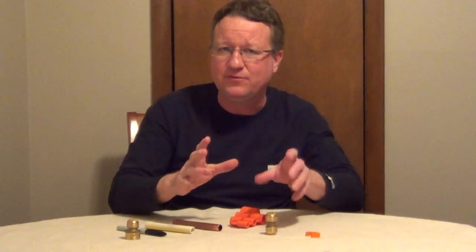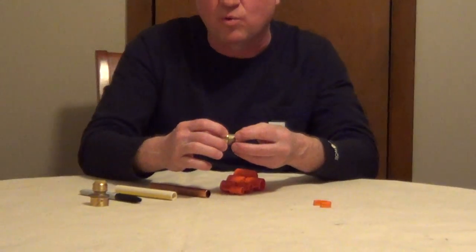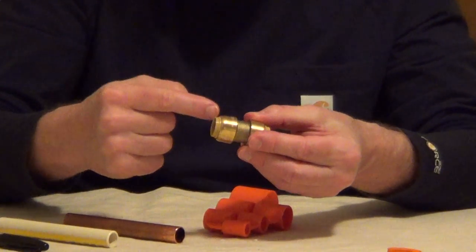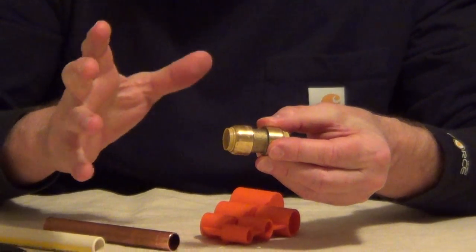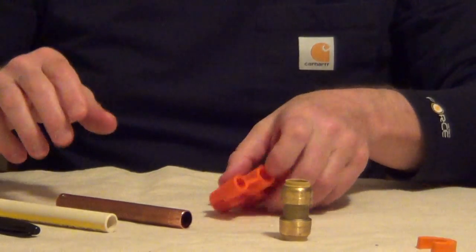The way SharkBite fittings work, they have an integrated O-ring that you need to lock your pipe in about an inch. And so this tool is excellent for a couple of things.